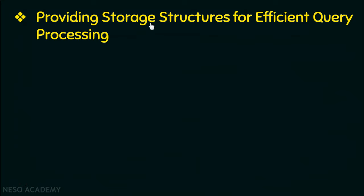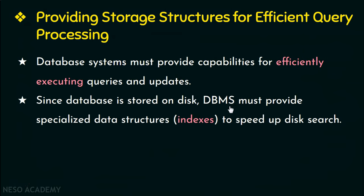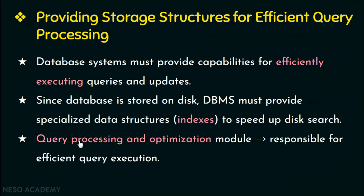The next advantage is providing storage structures for efficient query processing. Database systems must be capable of efficiently executing queries and updates. Since the database is stored on disk, DBMS provides special data structures like indexes to speed up disk search. Database records are copied from disk to main memory, and a database buffer allows temporary storage. A Query Processing and Optimization module is responsible for choosing how to process and execute queries efficiently.